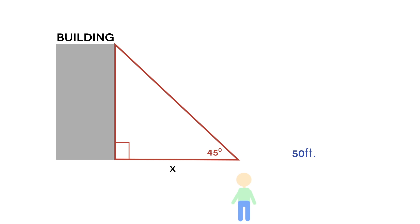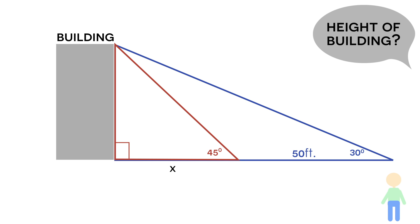Now when this man steps back 50 feet, the angle between the ground and the top of the building becomes 30 degrees. So using this information I have given you, the question for this problem is find the height of the building.